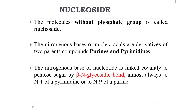Still on nucleotides — the molecule without a phosphate group is called a nucleoside. If there is no phosphate group, then you have nucleosides, which are just sugar and bases. The nitrogenous bases of nucleic acids are derivatives of two parent compounds.